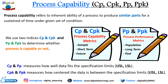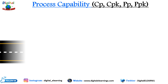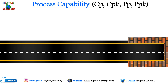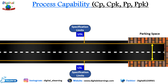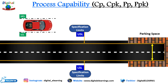Imagine you are driving a car and trying to park it in a parking space. The parking space represents the specification limits — upper specification limit and lower specification limit. The outer dimensions of the car represent the control limits — upper control limit and lower control limit. We cannot change the specification limits because these are derived directly from the customer. What we can control is the control limits — upper and lower control limit.